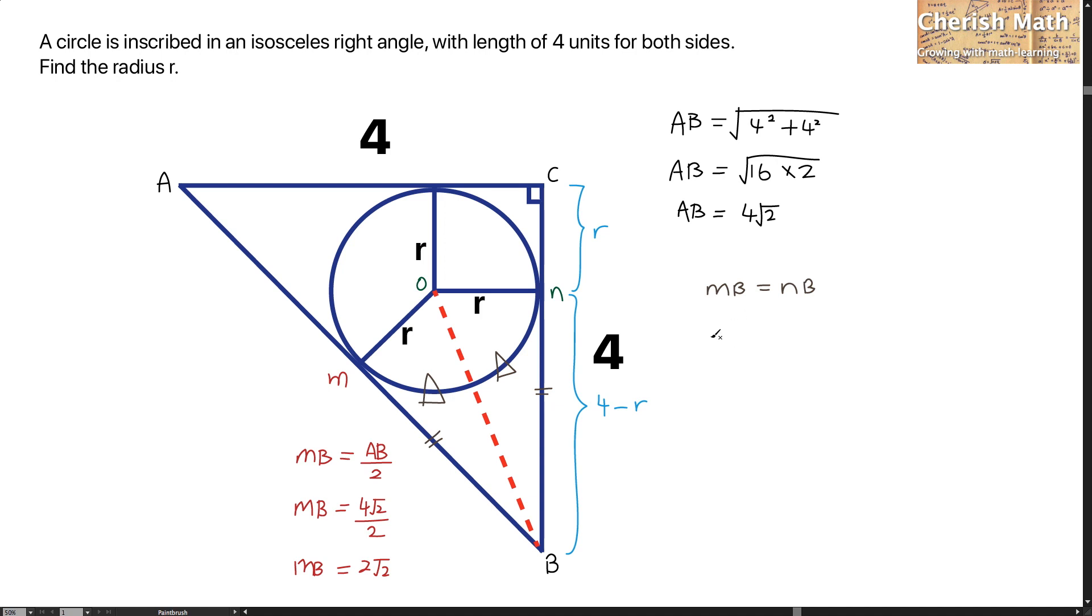So I just need to equate them directly. 2√2 equals 4 minus R. Therefore, R is 4 minus 2√2.